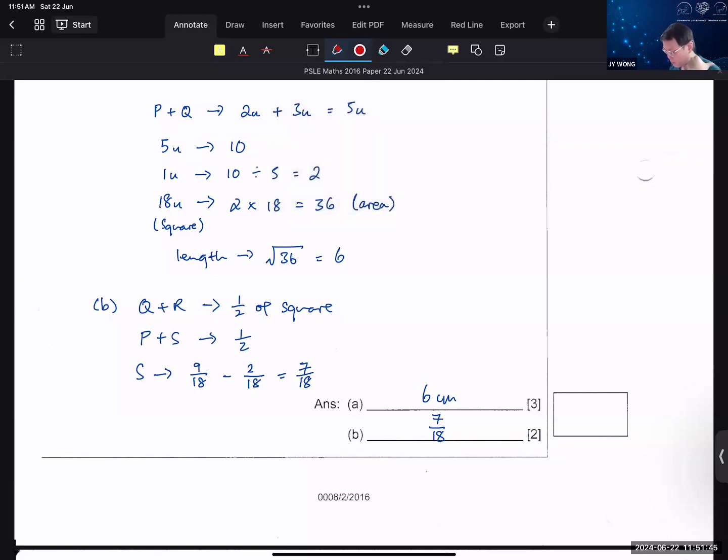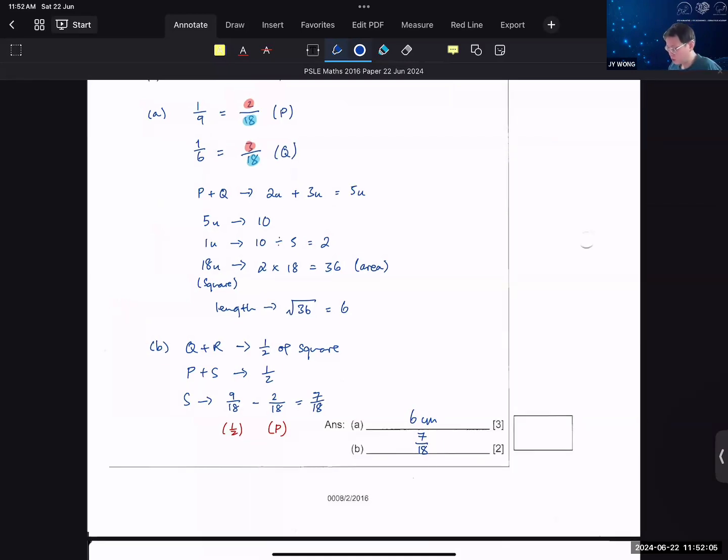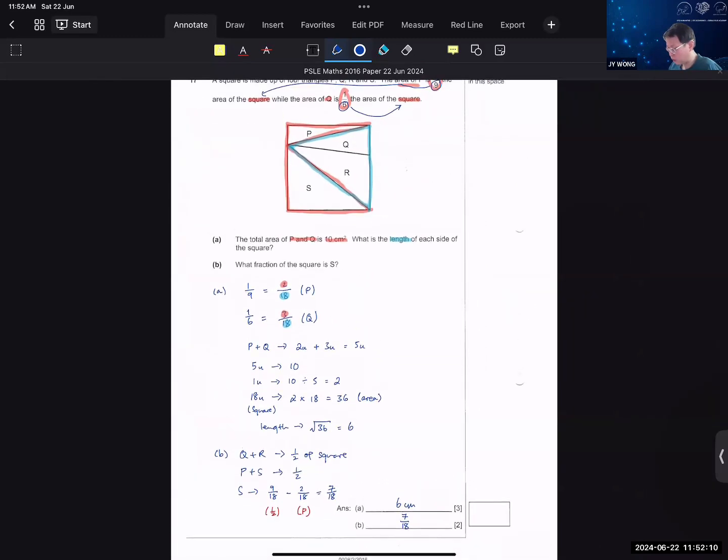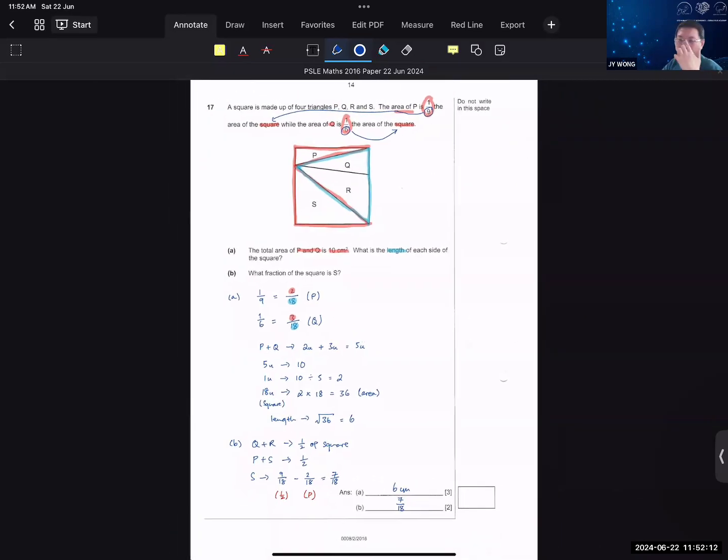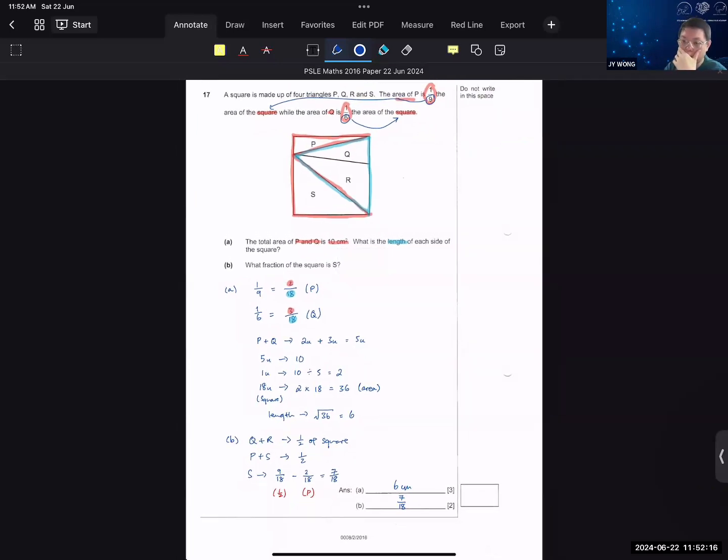You basically take half of the square minus away P, and that's how you get S. You already found the fraction of P in part A. So it's actually not a very difficult question, but I think a lot of students struggle with it. You just need to make sure you remember that when you get a triangle inscribed within a square or rectangle, if it covers the entire length and breadth, it will always be equal to half.